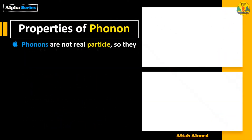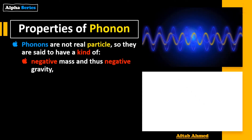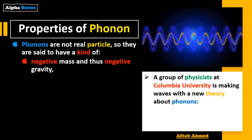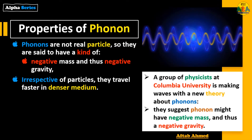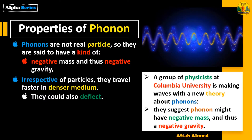Regarding properties of phonons: phonons are not real particles, so they are said to have a kind of negative mass and thus negative gravity. A group of physicists at Columbia University is making waves with a new theory about phonons, suggesting that phonons might have negative mass and thus negative gravity. Irrespective of ordinary particles, phonons travel faster in a denser medium, which is an astonishing discovery.